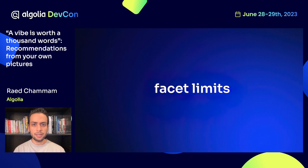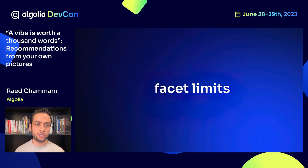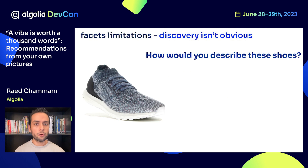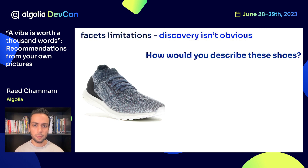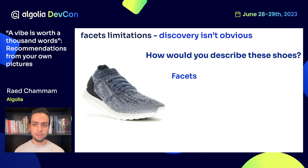Labels and facets show some limitations when both ends of the equation don't share similar language and vocabulary. For a more concrete example, let's step back and ask ourselves: how would you describe these shoes? Traditionally, we would use facets such as titles, description, colors, and other metadata to suggest related or complementary items.